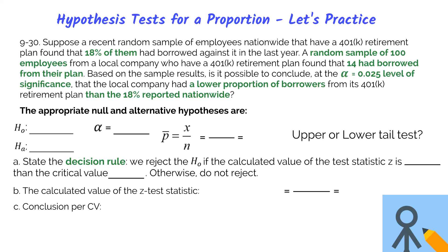We identify this as a lower-tailed test based on the directional word 'lower' in the problem. Since the story says 'lower proportion of borrowers,' we write the alternative hypothesis as p < 0.18, and the null hypothesis as p ≥ 0.18.